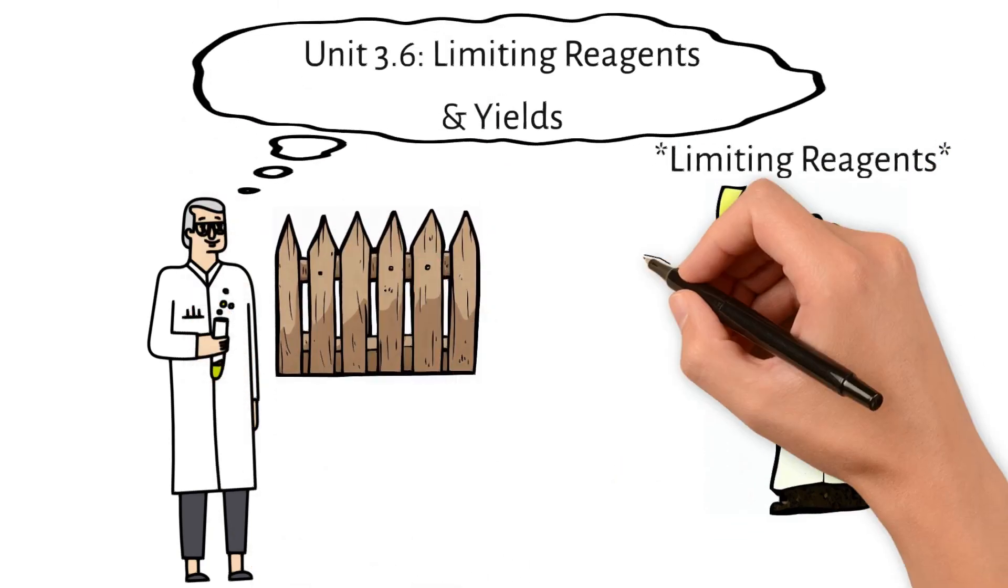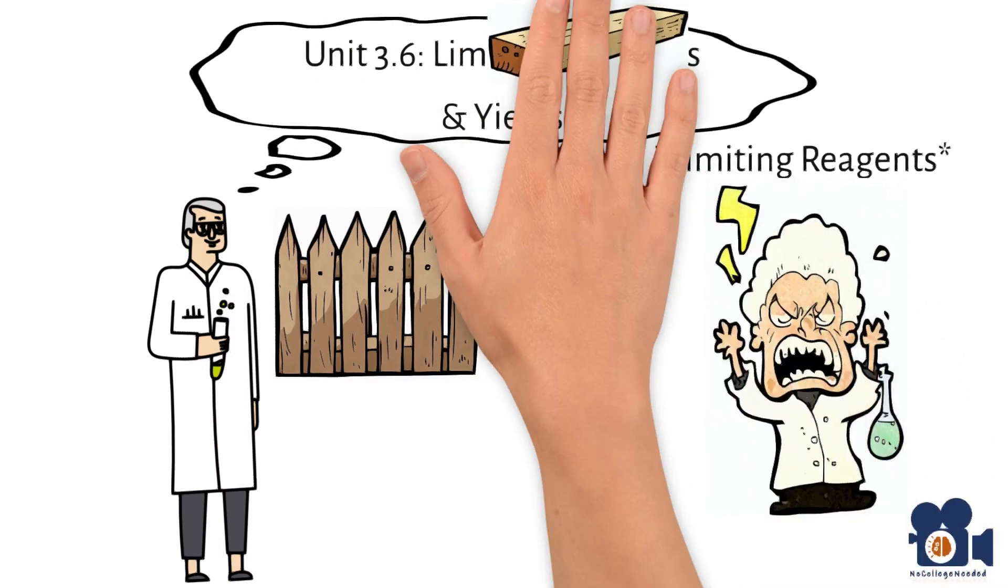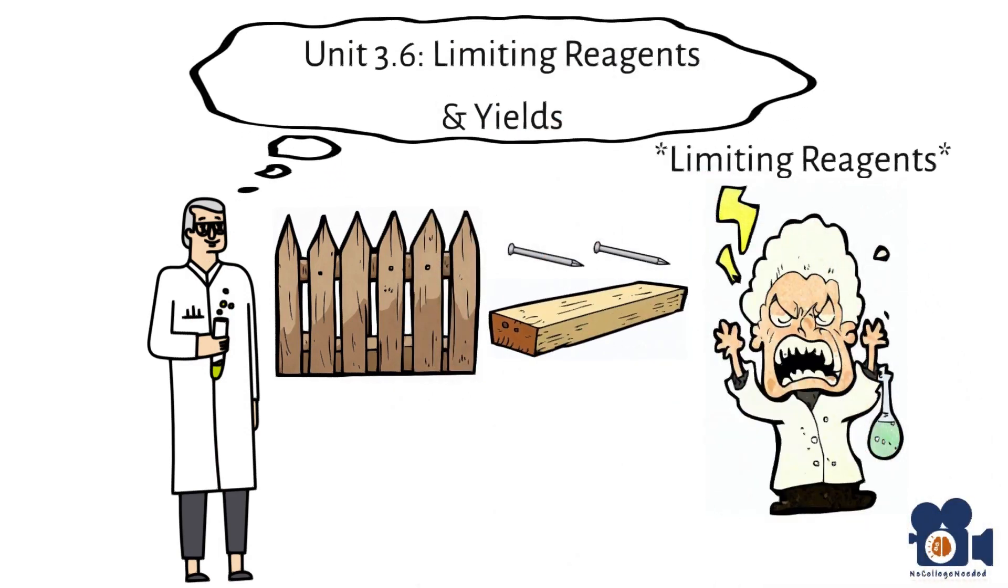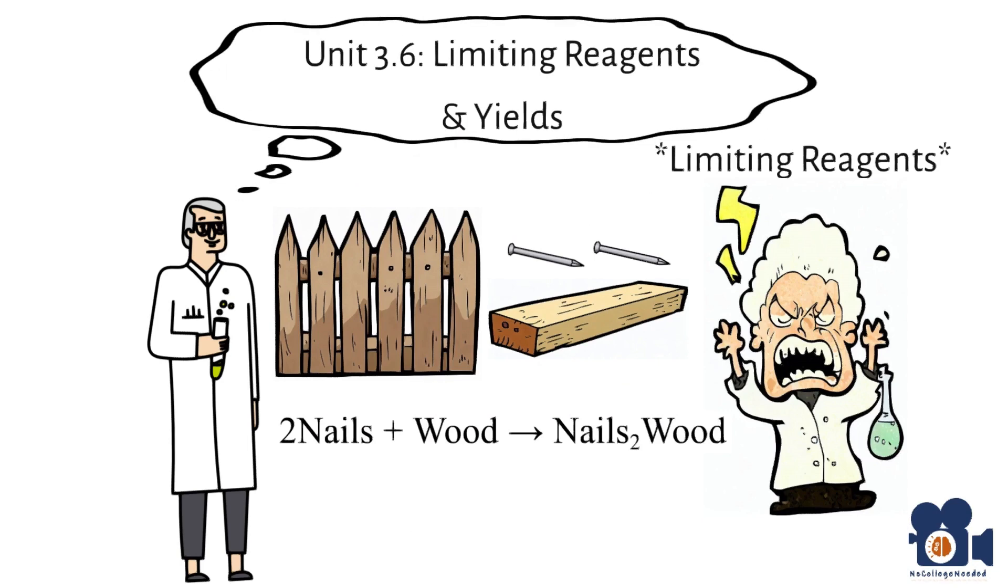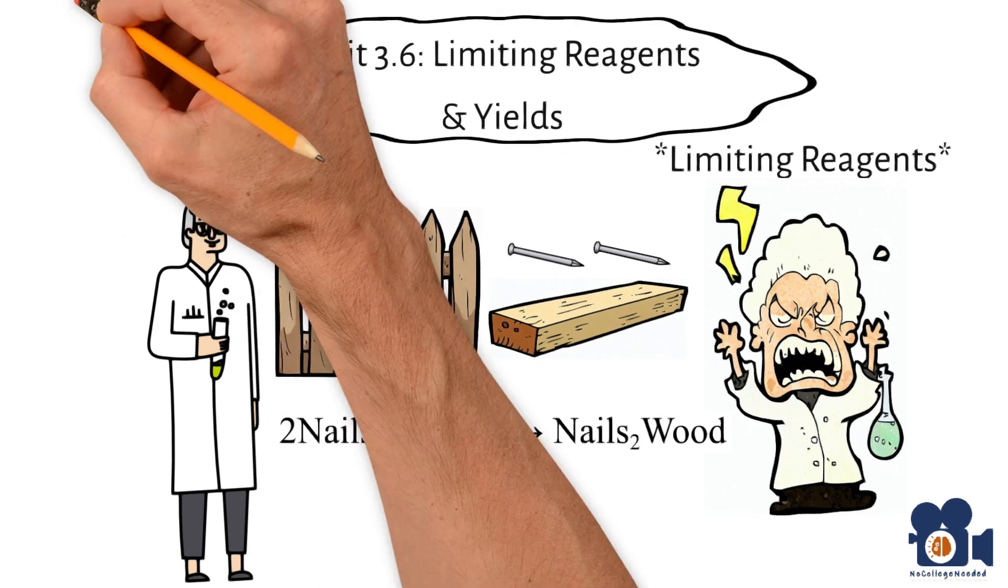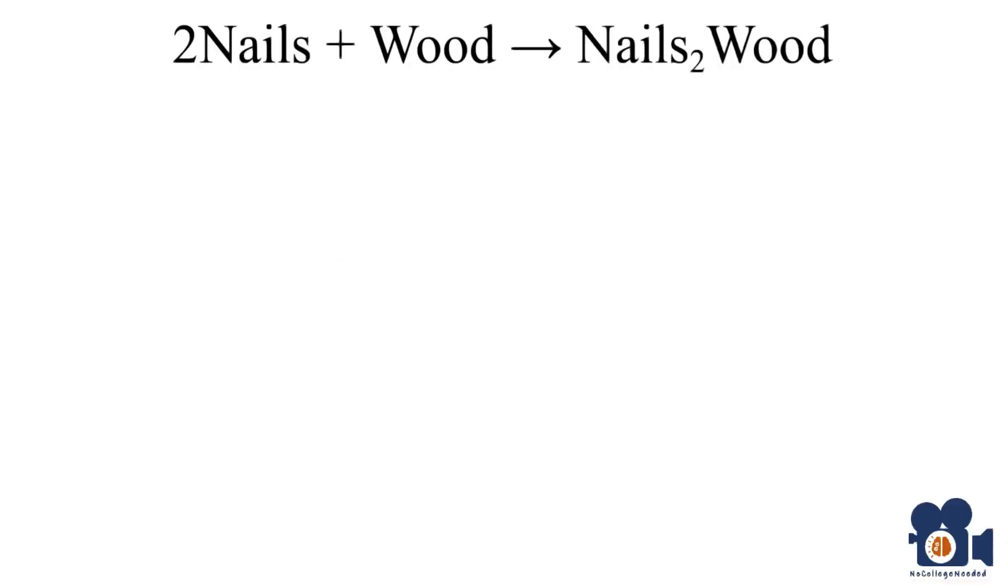To make a fence, you need nails and wood, but you most often do not need the same number of nails and wood. We can write the reaction of making a fence as such: 2 nails + wood → nails₂wood. Just looking at the equation, we do not know what the limiting reagent is.